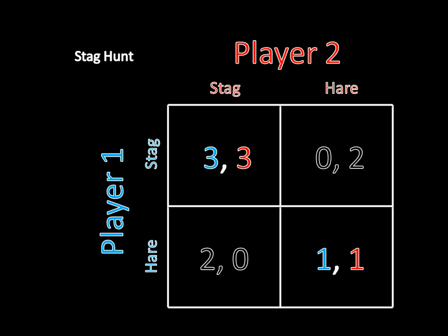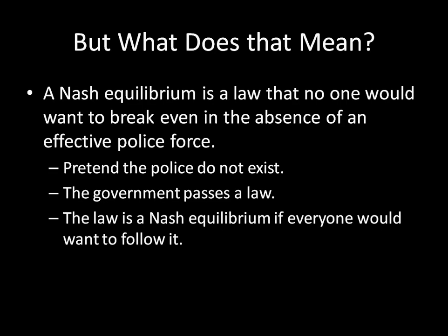However, for the moment, when we're talking about Nash Equilibrium, it's going to help to actually understand what the heck that definition means. And so one way of interpreting this is that a Nash Equilibrium is a law that no one would want to break, even in the absence of an effective police force. So take a new world, pretend that the police doesn't exist in this world, but the government passes a law. The law is a Nash Equilibrium if everyone would want to follow it, despite the fact that this police force just doesn't exist.